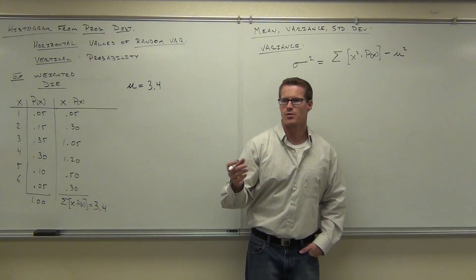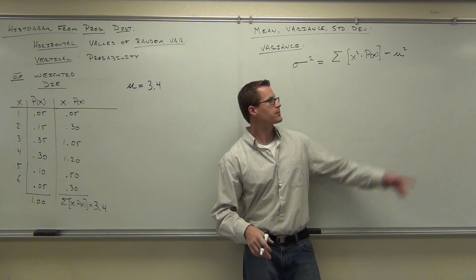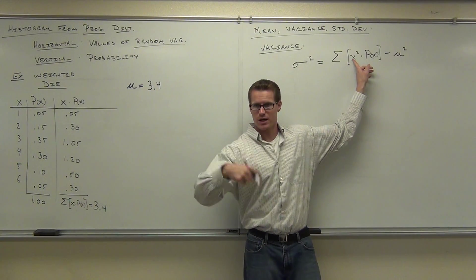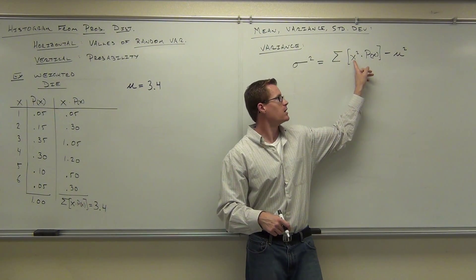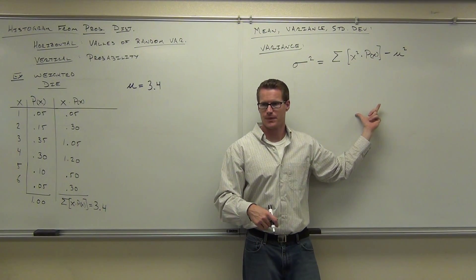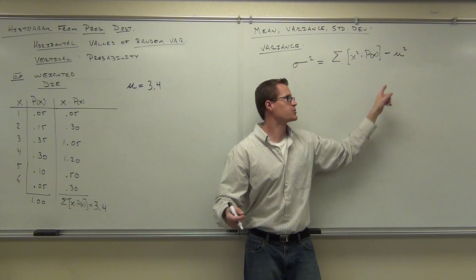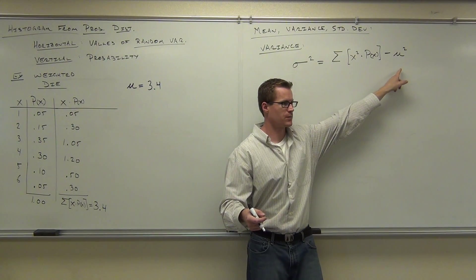It says, first off, use your order of operations. What do you do first? First, you're going to square some x's. You're going to square your x column. Next up, you're going to multiply those values that you just got times your probability. Then you're going to add it up. At the very end, you're going to subtract the mean squared. You with me on this?